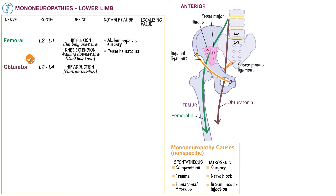Although obturator neuropathy itself is rare, indicate that this is a key muscle set to examine because obturator nerve involvement helps distinguish L2 to L4 radiculopathy from femoral neuropathy. L2 to L4 radiculopathy produces obturator nerve distribution weakness, whereas femoral neuropathy does not.